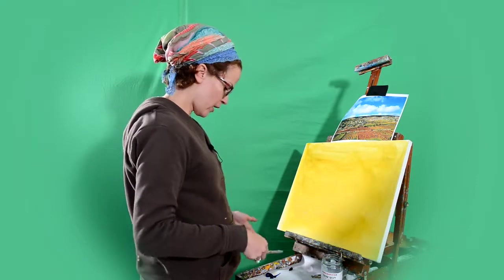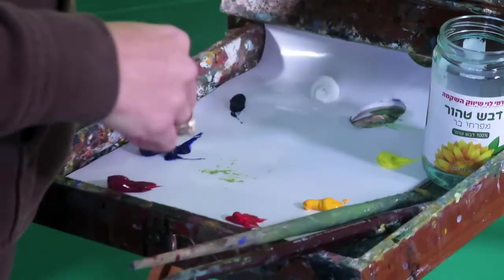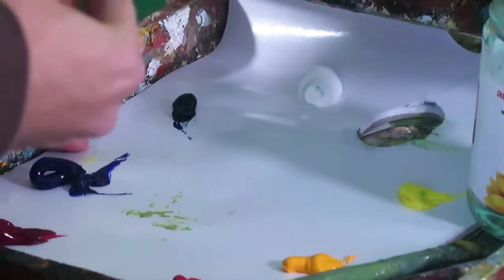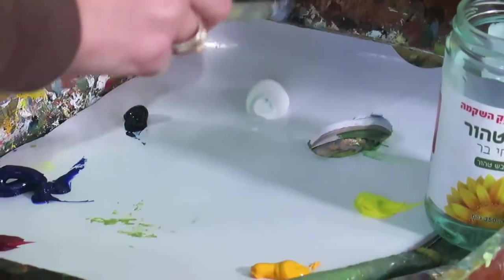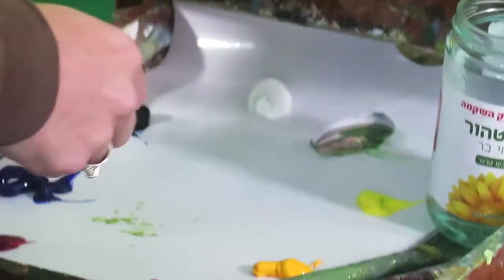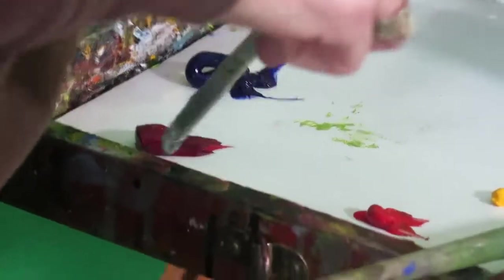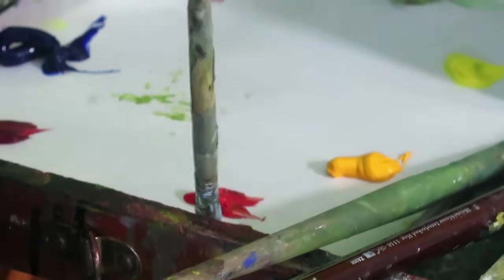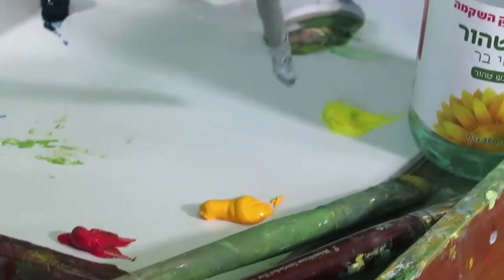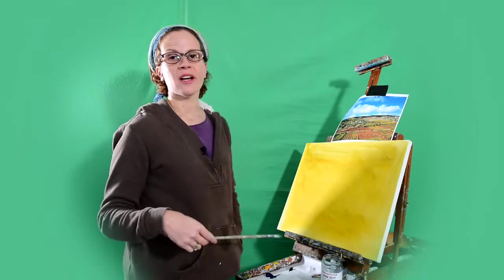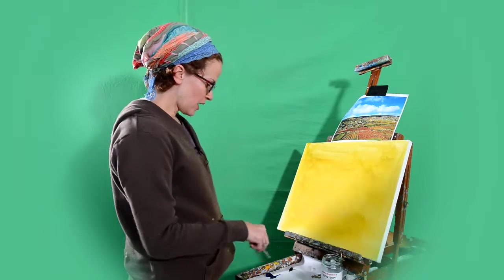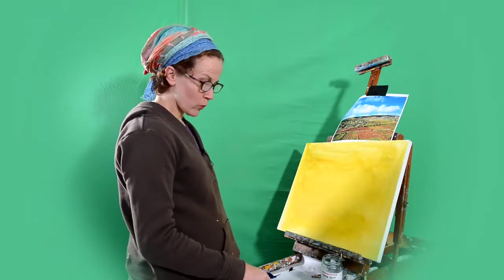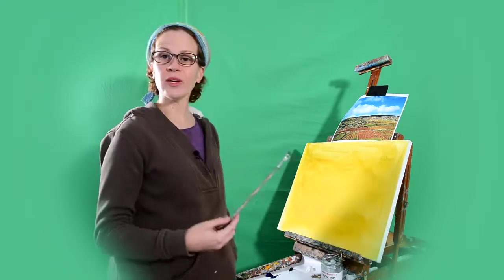Over here, I have my palette set up with the primary colors in both warm and cool tones. So I have the titanium white, Perugian blue, ultramarine blue, alizarin crimson, cadmium red, cadmium yellow, and lemon yellow, lemon cadmium. So that way, I have all the primary colors there waiting for me.